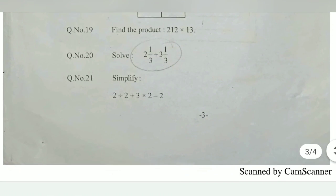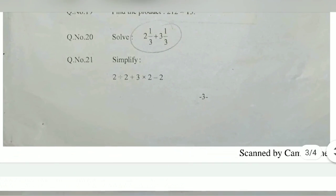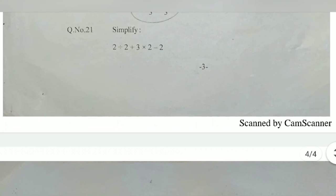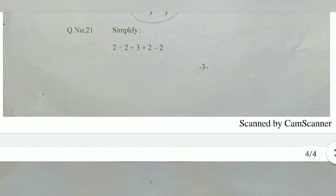Solve 2 1/3 plus 3 1/3: 2 into 3 plus 1 divided by 3, so mixed fraction, change to improper fraction and just add that fractions. Simplify 2 divided by 2 plus 3 into 2 minus 2. First the operation of division, after that multiplication, after that addition and subtraction. This is the order of operation. 2 divided by 2 want to do first, 2 divided by 2 is 1, and after that 3 into 2 second, 3 into 2 is 6.